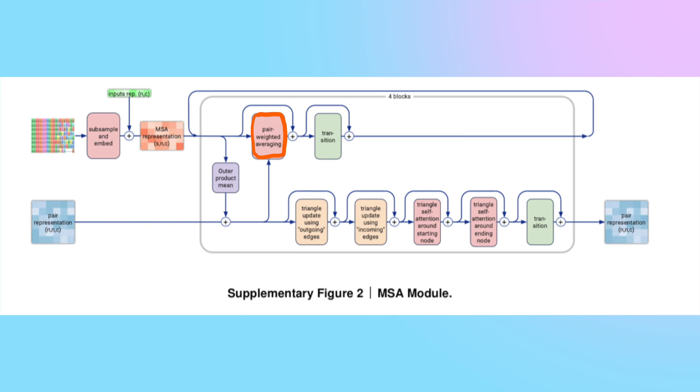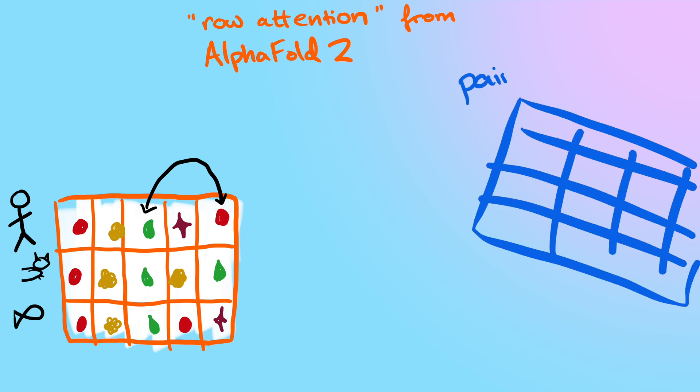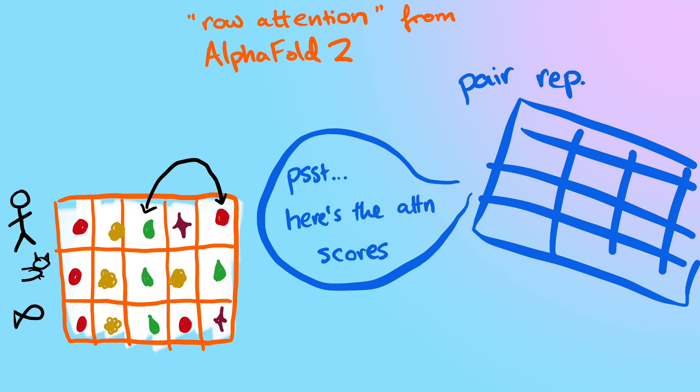This is basically replacing the raw attention, which was looking inside of the MSA and looking at different pairs of amino acids and seeing how they're related to each other. The way that they've done it is really clever. They use the pair representation to decide the attention scores. So that was very clever.